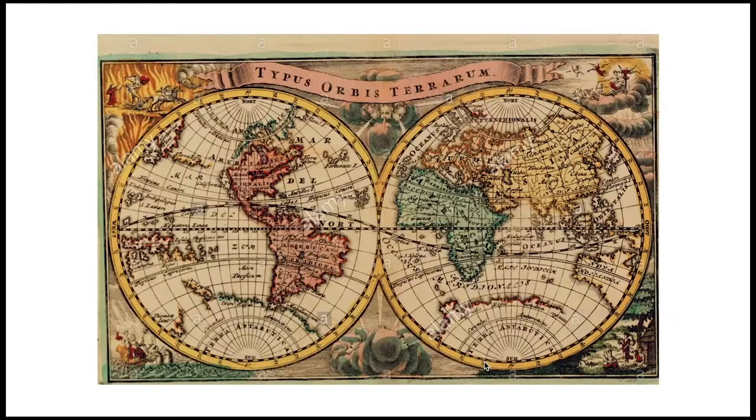What are the map-making tools that we use to navigate our surroundings? Cartography is the science of drawing maps. This is a world map from 1664.